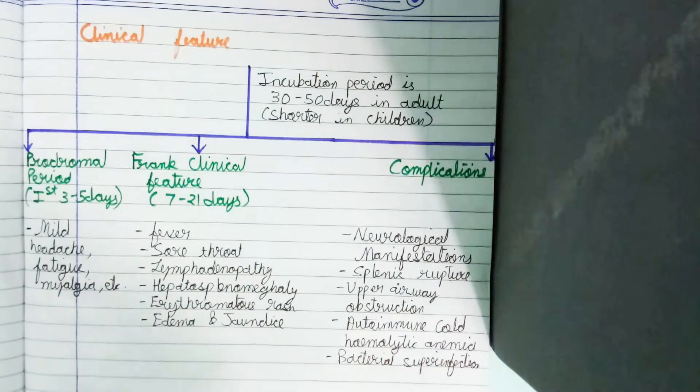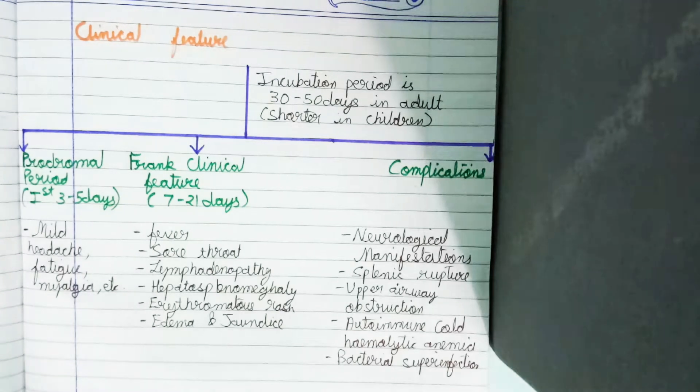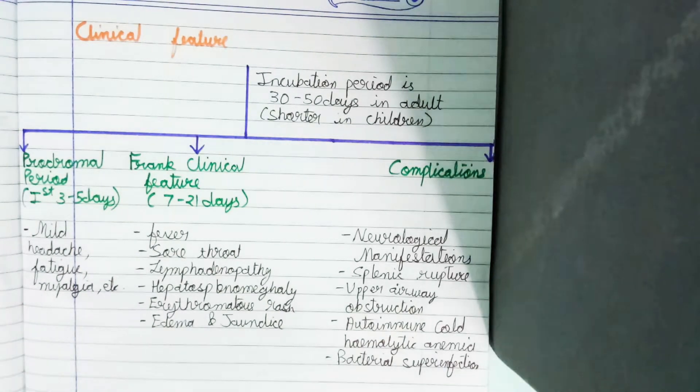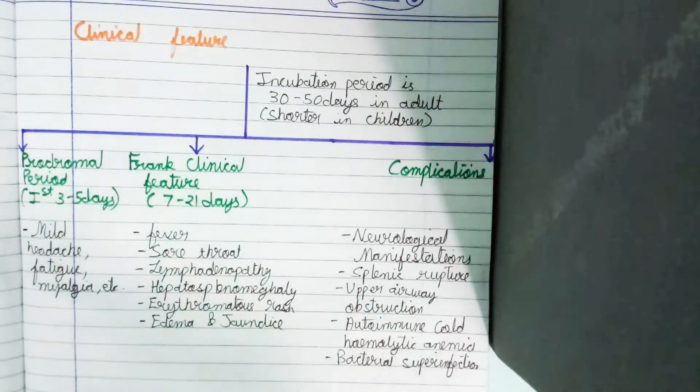Now we discuss clinical features. Incubation period is about 30 to 50 days in adults and shorter in children. It is divided into three parts: prodromal period, frank clinical features, and complications.